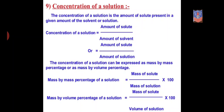The concentration of a solution can be expressed as mass by mass percentage or mass by volume percentage. Mass by mass percentage formula is: mass of solute upon mass of solution into 100. For mass by volume percentage, the numerator is mass of solute and the denominator is volume of solution, multiplied by 100.